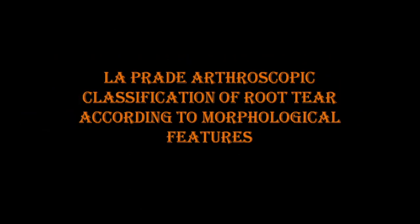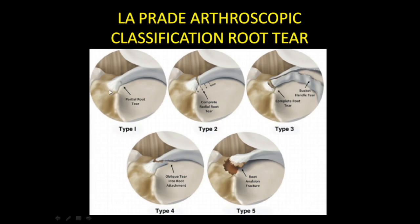There is also a Lapradi arthroscopic classification of root tears based on morphological features: Type 1 — partial root tear; Type 2 — complete radial root tear; Type 3 — complete root tear with a bucket-handle component; Type 4 — oblique tear into the root attachment; Type 5 — root avulsion with a fragment of bone avulsed along with the root.